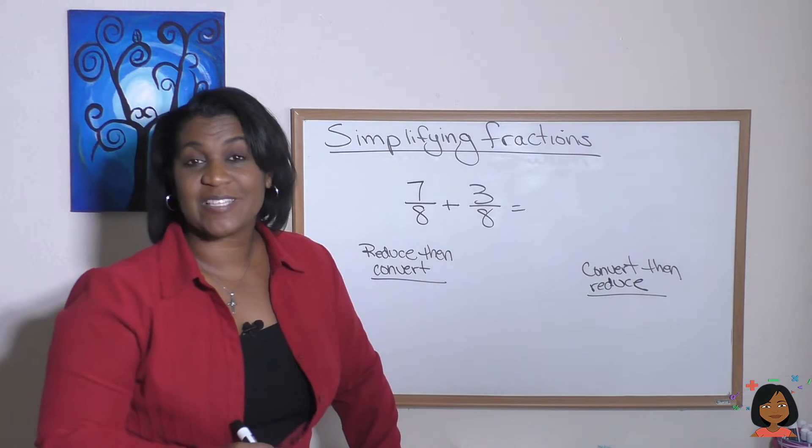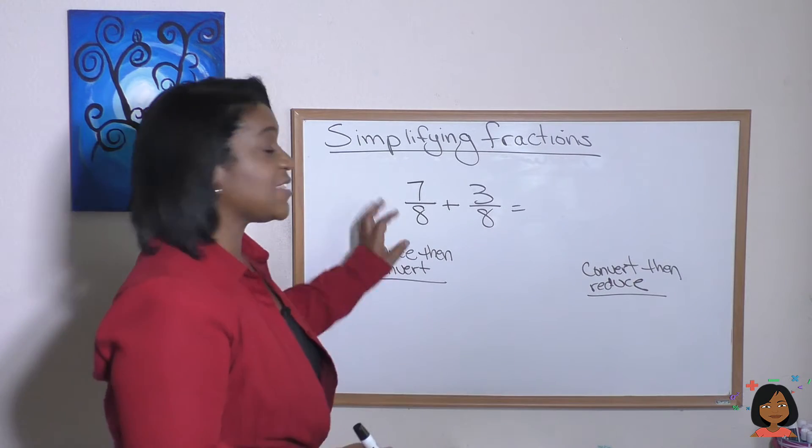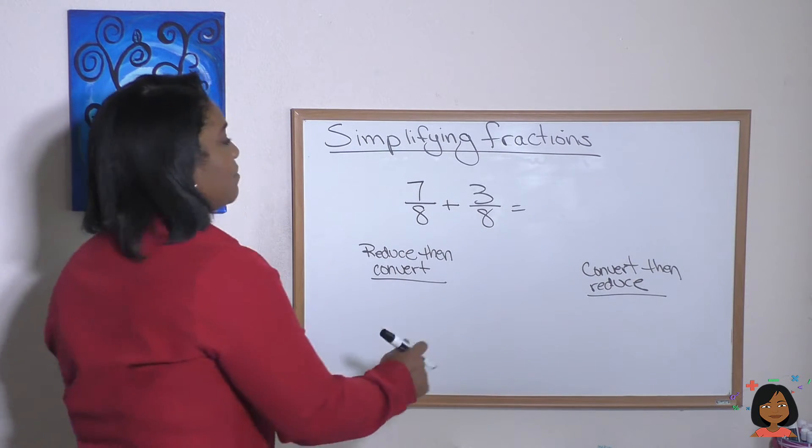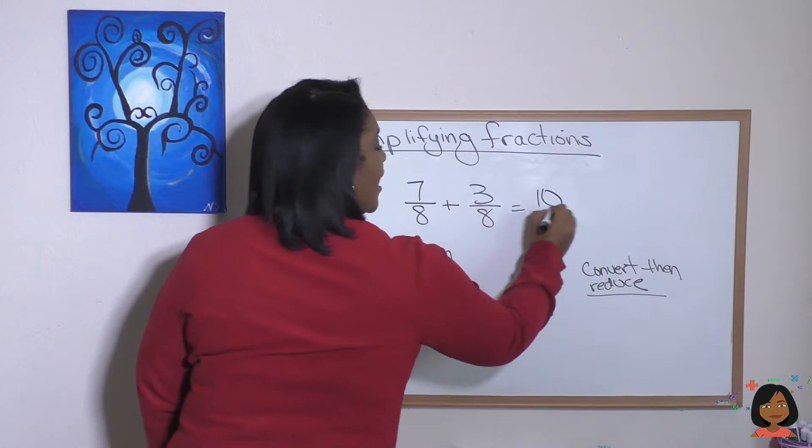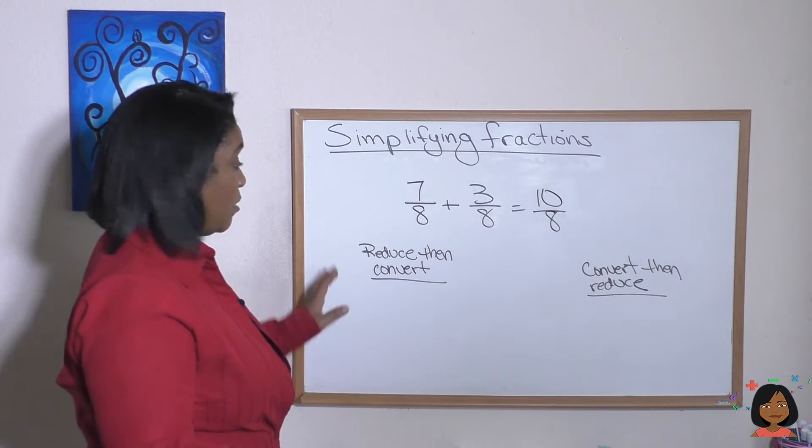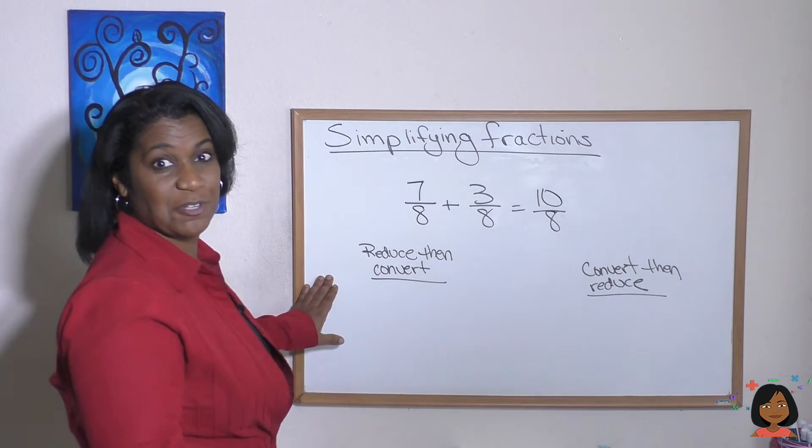Let's take a look at one more example. Here we have 7 eighths plus 3 eighths. Let's go ahead and add that. 7 eighths plus 3 eighths is 10 eighths. And at this point, we can do reduce then convert or convert then reduce.